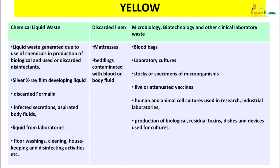Chemical liquid waste includes liquids generated from use of chemicals in production of biologicals, used or discarded disinfectants, silver X-ray film developing liquid, formalin, infected secretions, aspirated body fluids, liquids from laboratories, floor washings, discarded linen, mattresses and beddings contaminated with blood or body fluids. Microbiology waste includes blood bags, lab cultures, stalks or specimens of microorganisms, live or attenuated vaccines, cell cultures from research and industry laboratories, petri dishes and devices used in cultures.